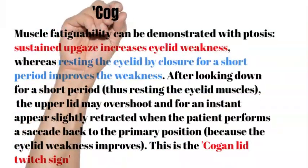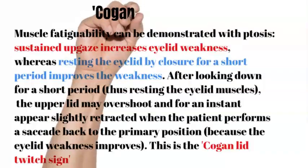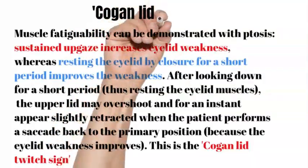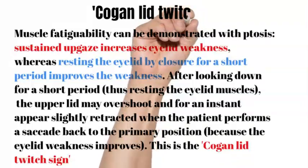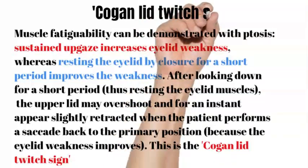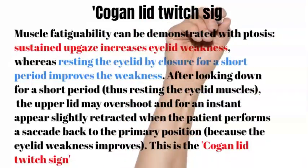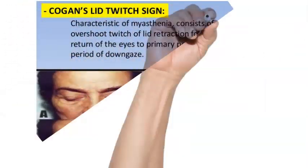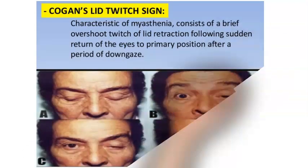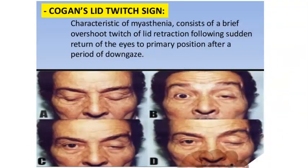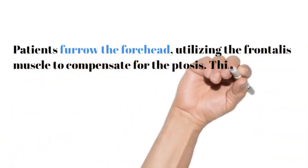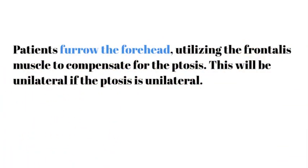After looking down for a short period, thus resting the eyelid muscles, the upper lid may overshoot, and for an instant appear slightly retracted when the patient performs a saccade back to the primary position. Because the eyelid weakness improves, this is the Kogan lid twitch sign. Patients furrow the forehead, utilizing the frontalis muscle to compensate for the ptosis. This will be unilateral if the ptosis is unilateral.